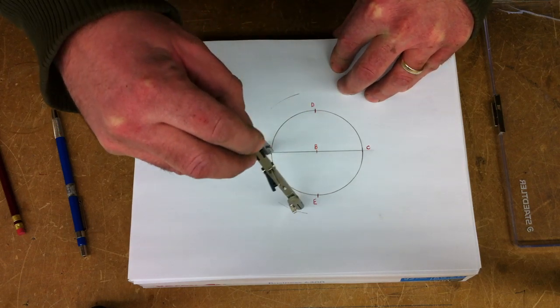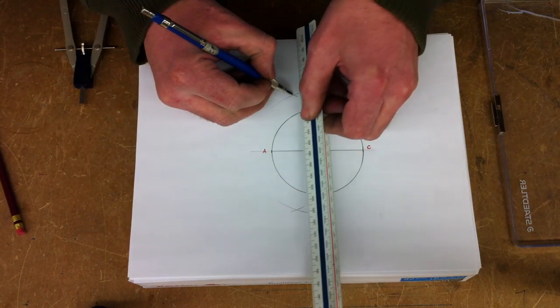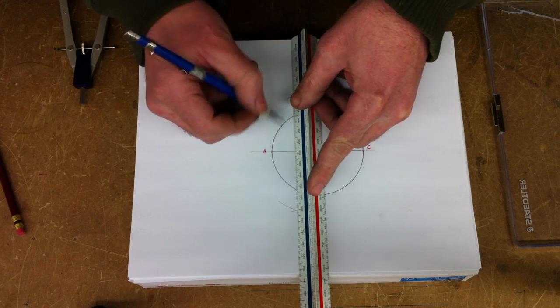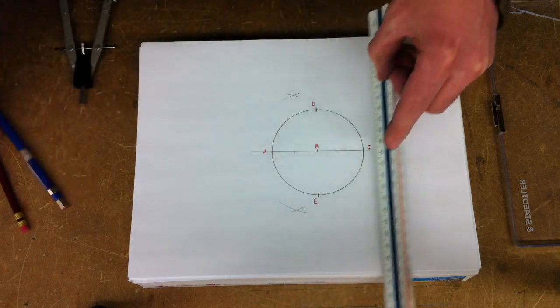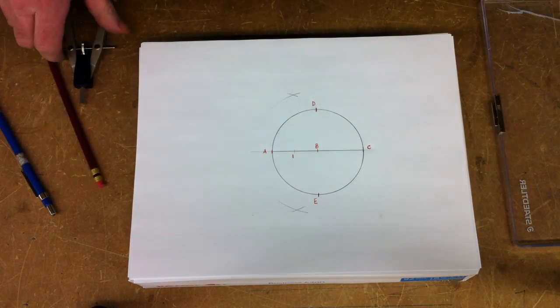Scribe arcs that intersect to create points. With those points, we can create a new point, point 1, directly in the middle of points A and B.